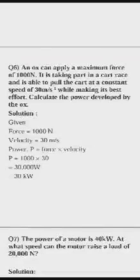Question is an ox can apply a maximum force of 1000N. It is taking part in a cart race and it is able to pull a cart at a constant speed of 30 meter per second. Calculate the power. If you read it carefully, 1000N is the force given. Speed that is nothing but velocity is 30 meter per second. So power is F × V. F is 1000 × V that is 30. So 1000 × 30 is 30,000 Watt, which I can write it as 30 kW.